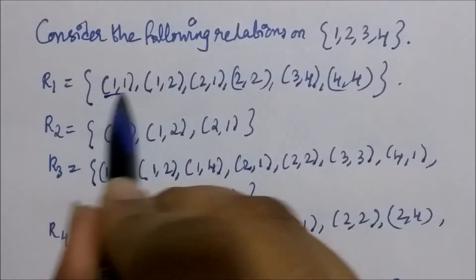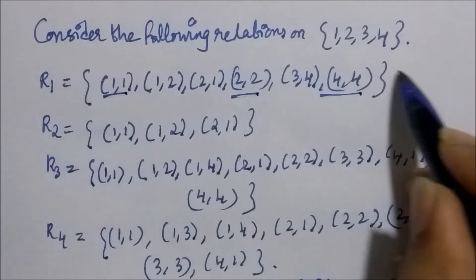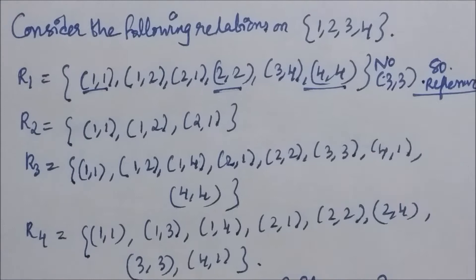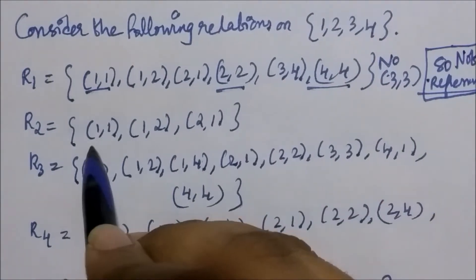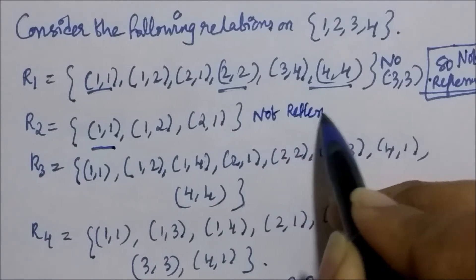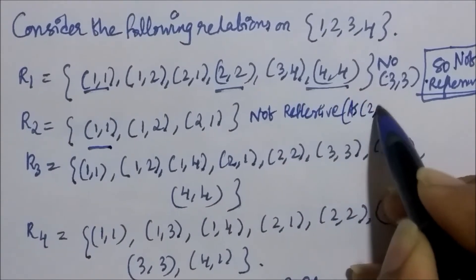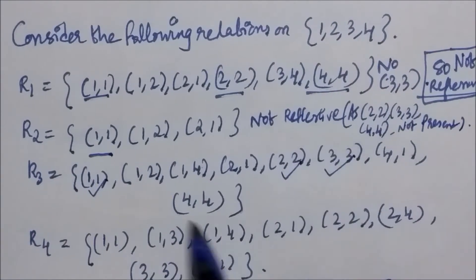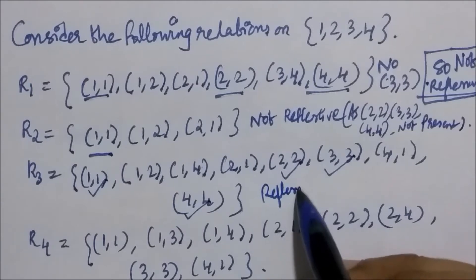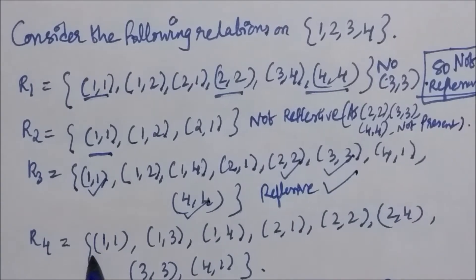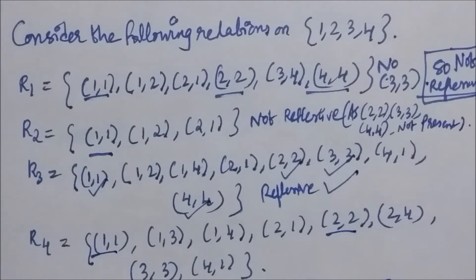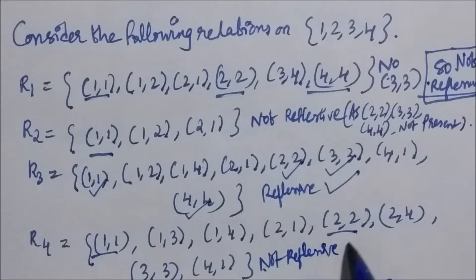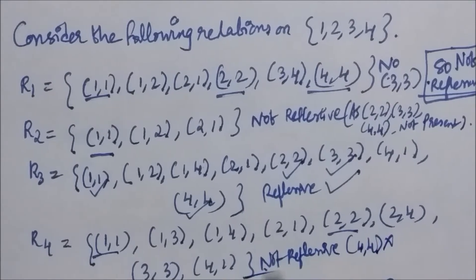R1 has (1,1), (2,2), and (4,4) but not (3,3), hence it's not a reflexive relation. R2 has only (1,1); (2,2), (3,3), and (4,4) are missing, so R2 is not reflexive. R3 has (1,1), (2,2), (3,3), and (4,4) — all four are present, so R3 is a reflexive relation. R4 has (1,1), (2,2), and (3,3) but not (4,4), so R4 is not a reflexive relation.